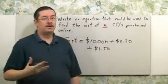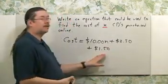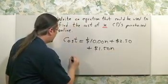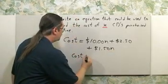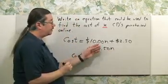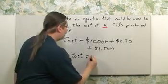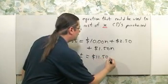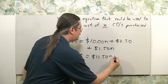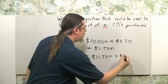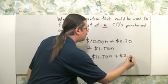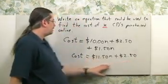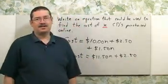Since the shipping charge is per CD, you also multiply that by N. I can simplify this — just add these two up. You're combining like terms, and you're going to get $11.50 times N plus $2.50. And this is my online cost equation.